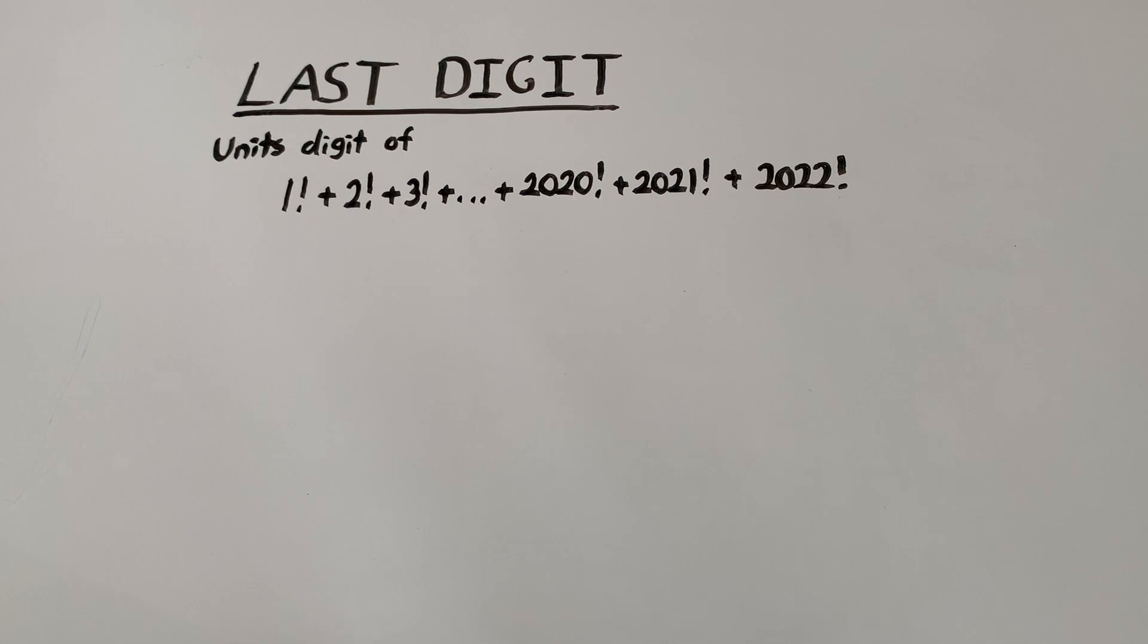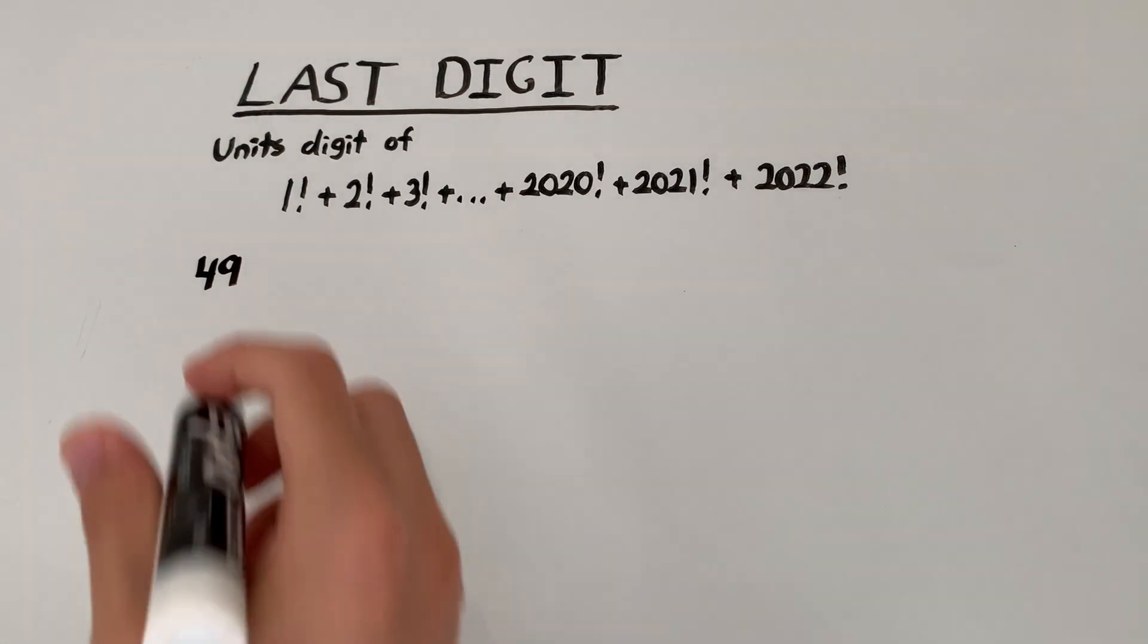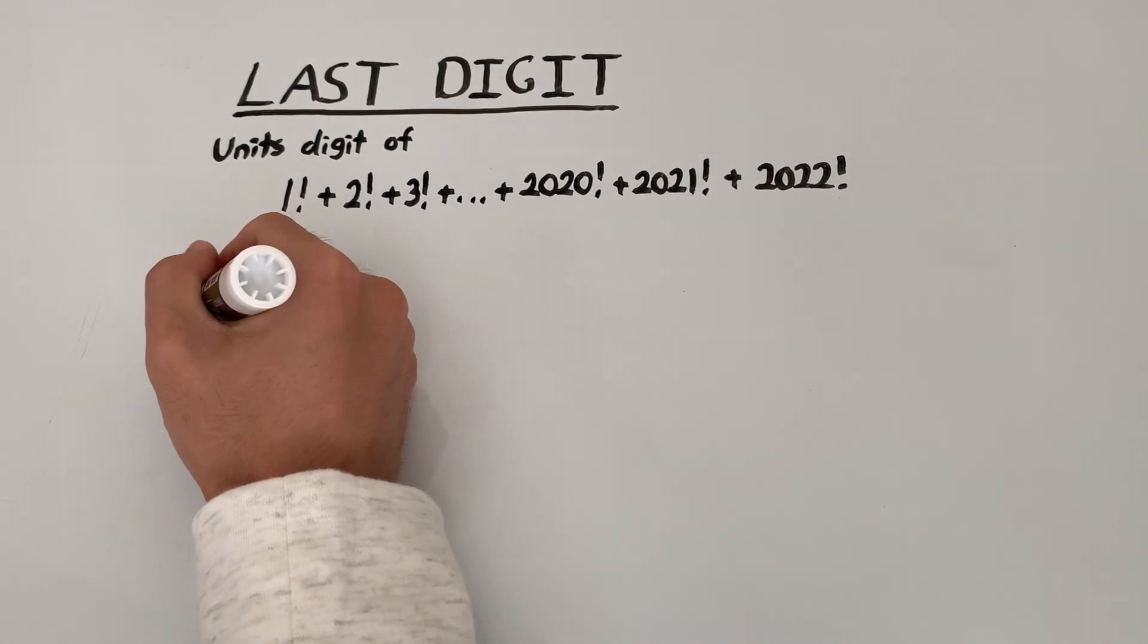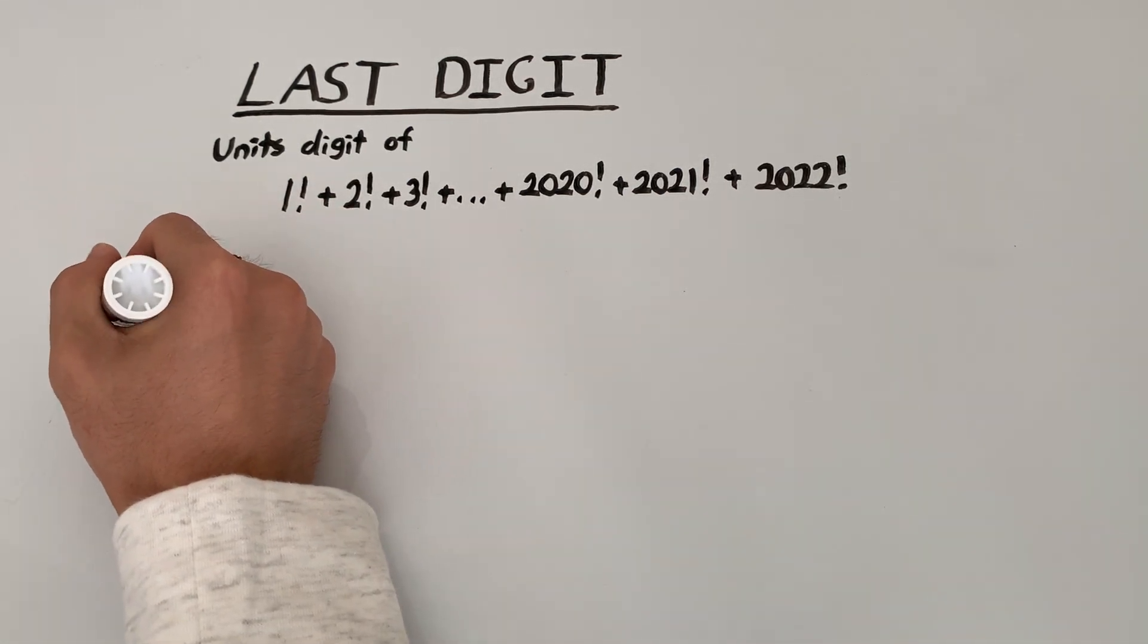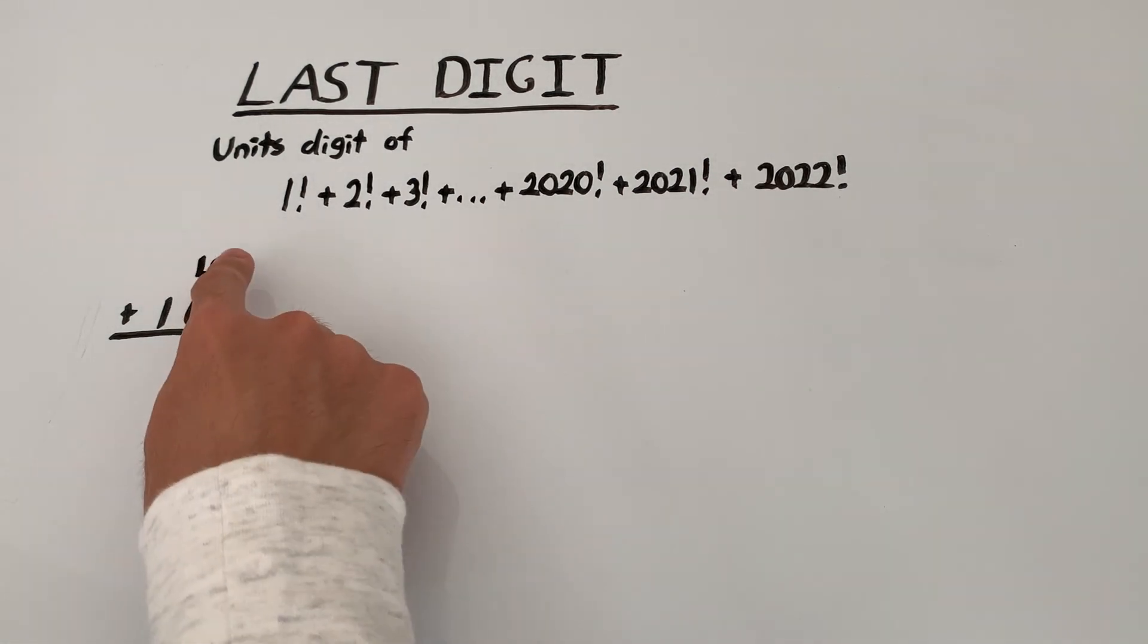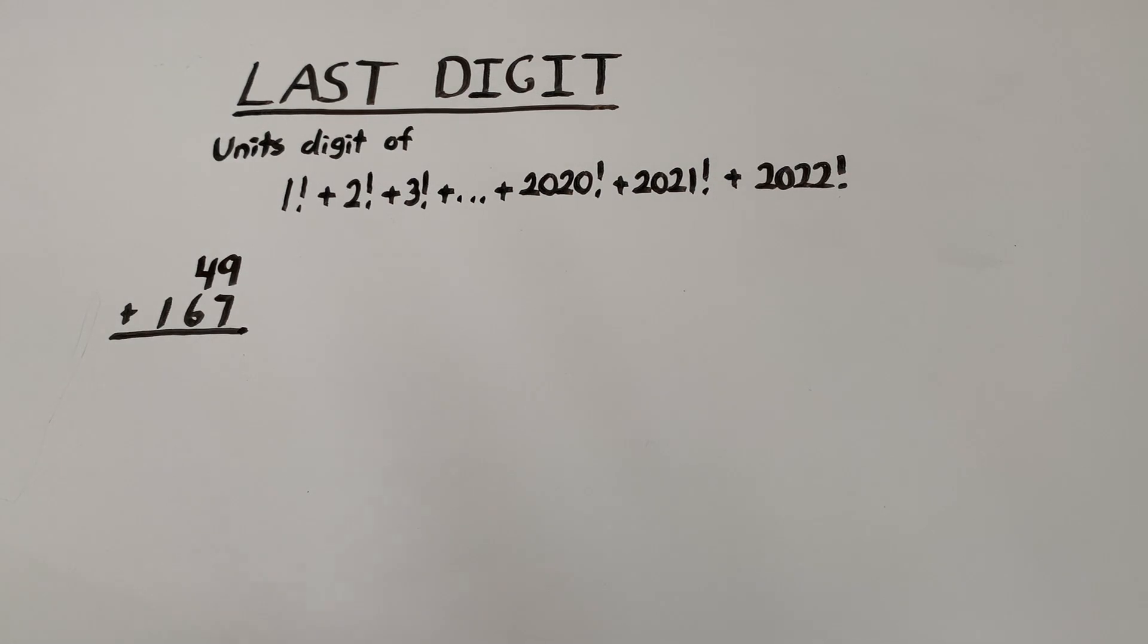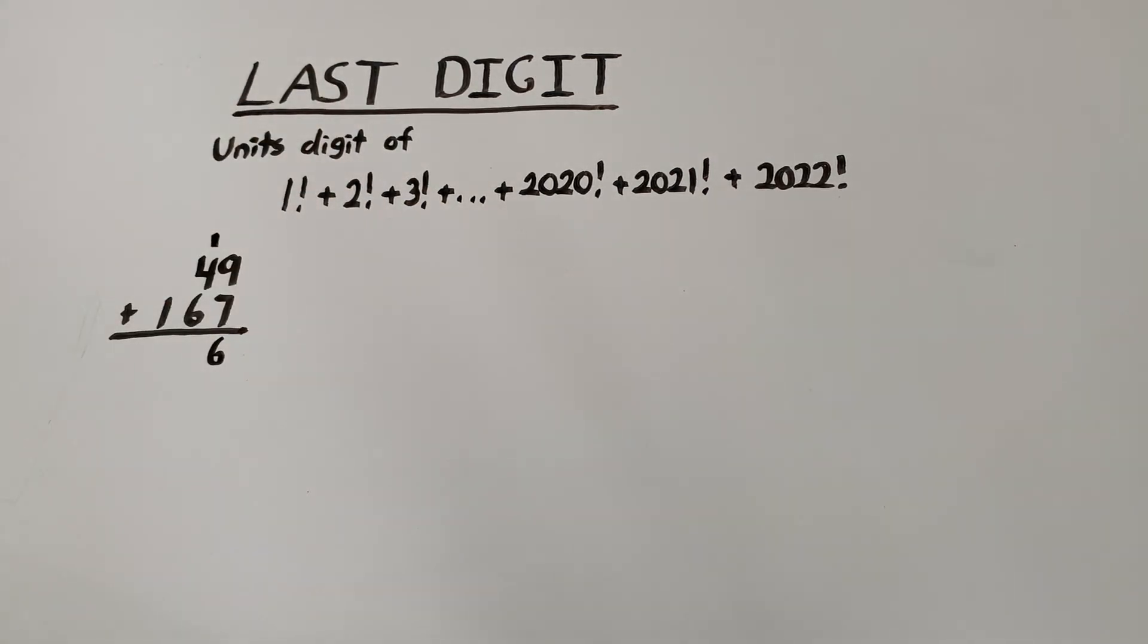Let's say that we have to sum two numbers. Let's say 49 and 167. The units digit of this sum is just going to be 9 plus 7, which is 16. That ends in a 6. The 1 is going to carry over, but we don't care about the 1 because we only care about the units digit.